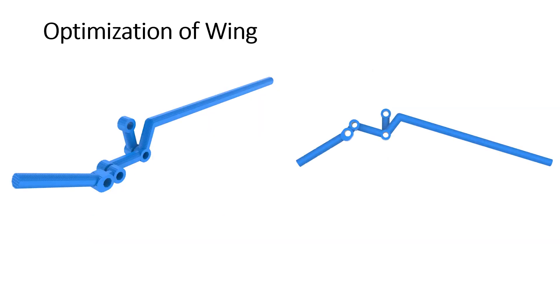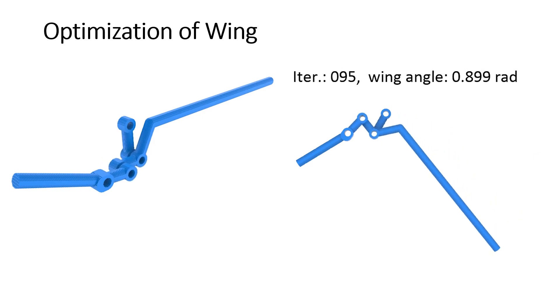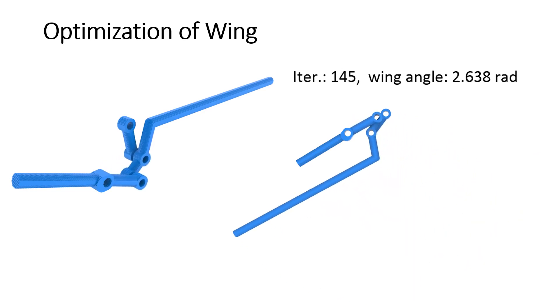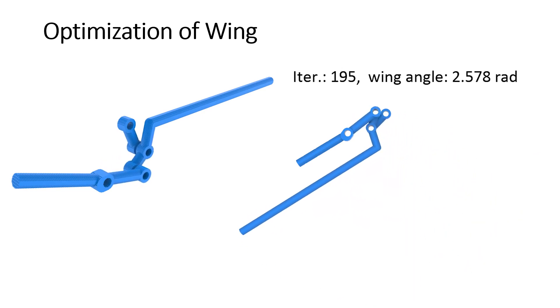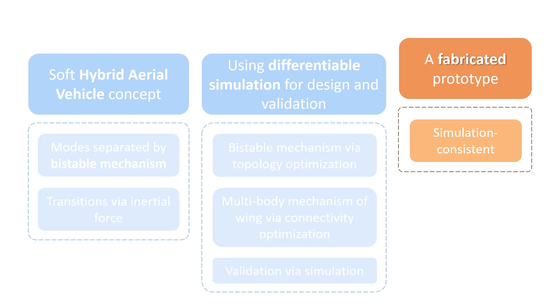The optimization procedure of joint locations and the rotation angle evolution are visualized here. With all parts designed, we test the full HAV system with dynamic forward simulations again and proceed to fabrication.